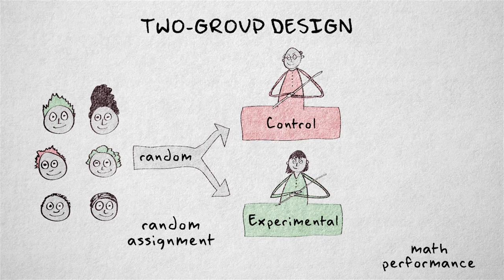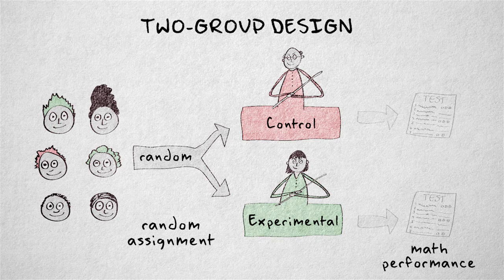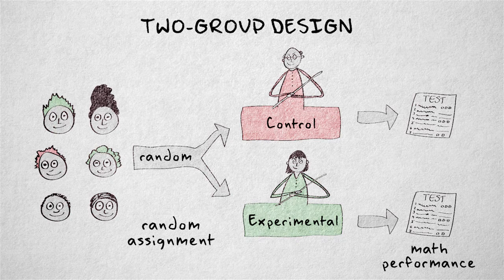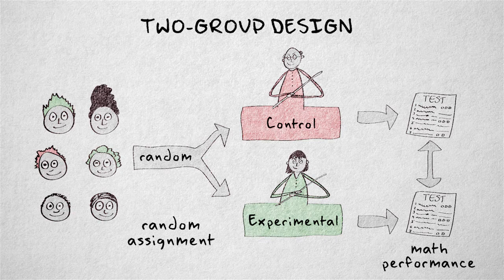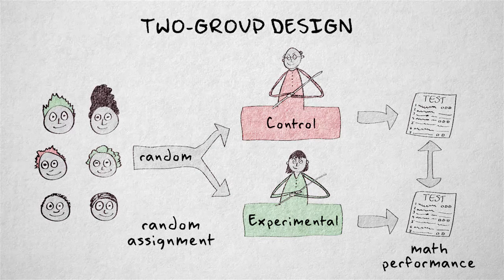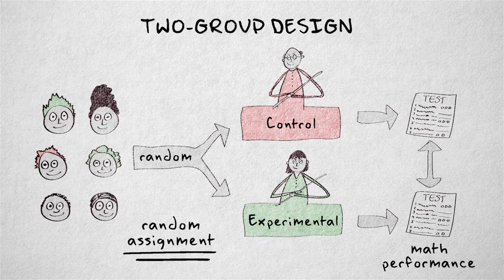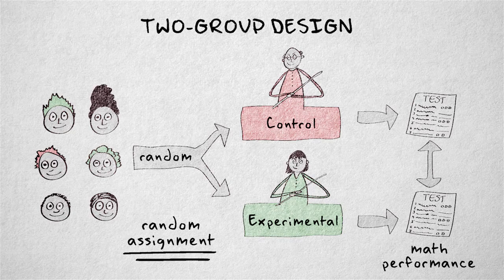In the two-group design, the dependent variable is measured after exposure to the independent variable, to assess the difference between the conditions, which are likely to be similar in all respects due to the random assignment, including their pre-existing position on the dependent variable.